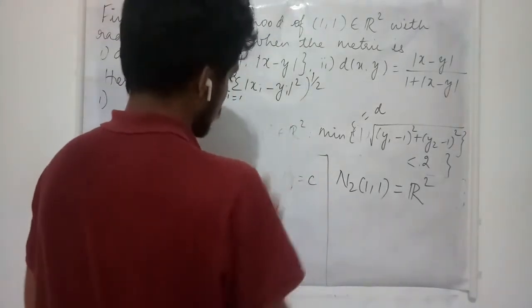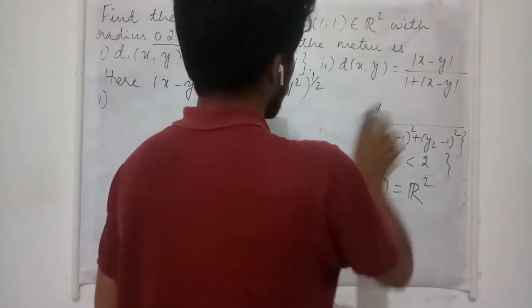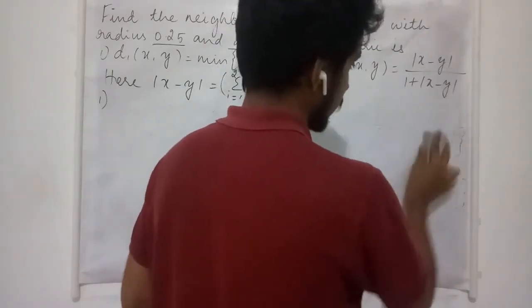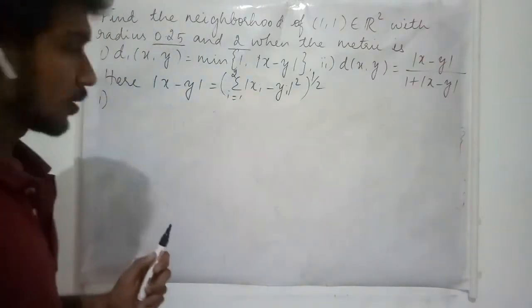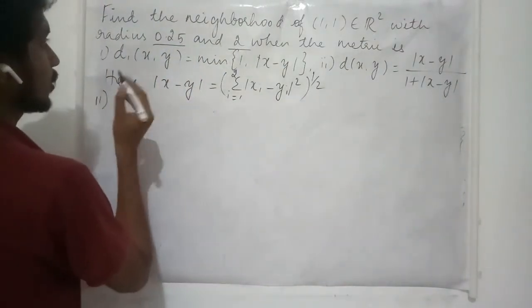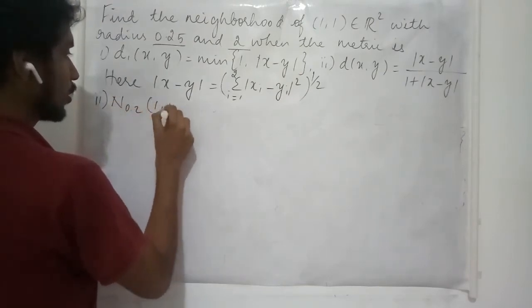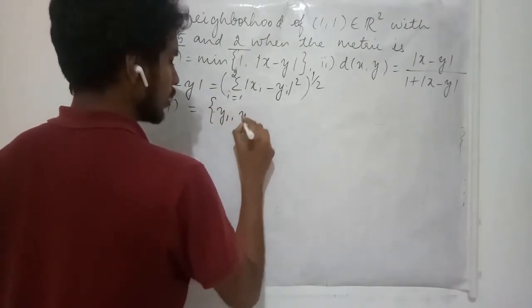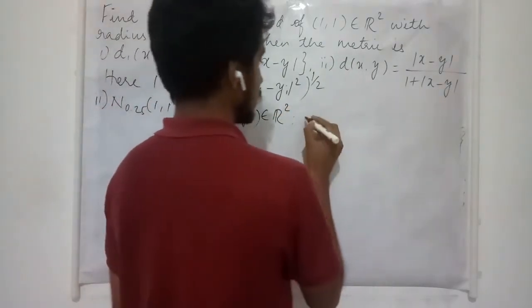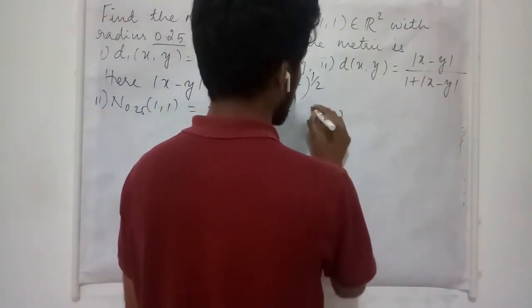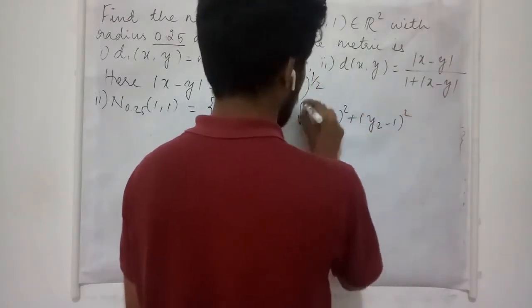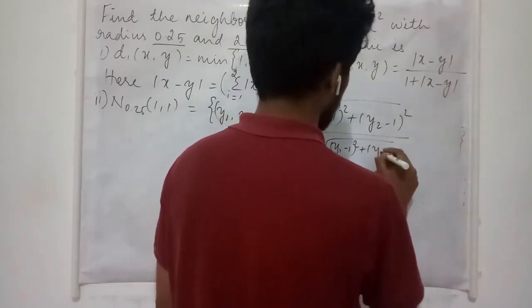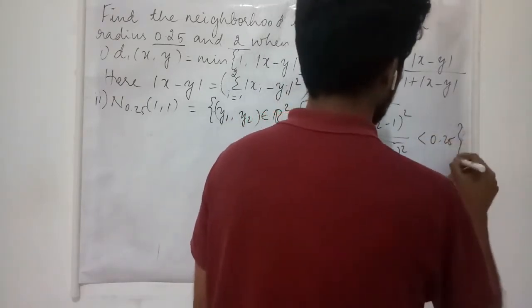Now let us see the next case — the same problem but when the metric is defined in a different way. We need to find out the neighborhood of (1,1) with radius 0.25. It is going to collect the ordered pairs in R² satisfying the condition: √((y₁−1)² + (y₂−1)²) divided by (1 + √((y₁−1)² + (y₂−1)²)) is less than 0.25.